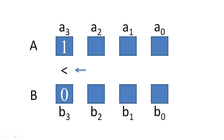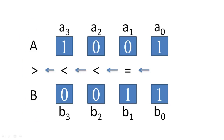Finally, when we compare the most significant bits, the most significant bit of A is greater than the most significant bit of B, so A is greater than B. For each stage of the comparison, we needed to know what previous comparisons had found about the two numbers, and we needed to know the value of the two most significant bits of A and B up to that point of the comparison.